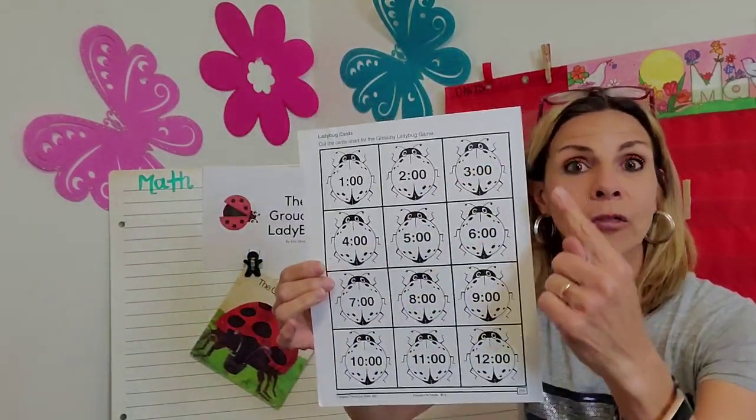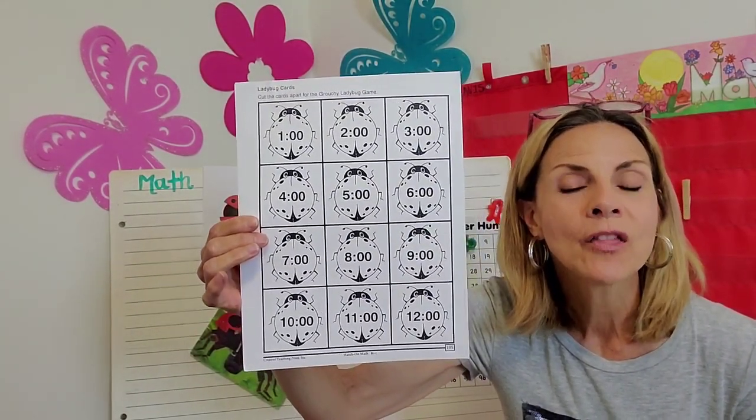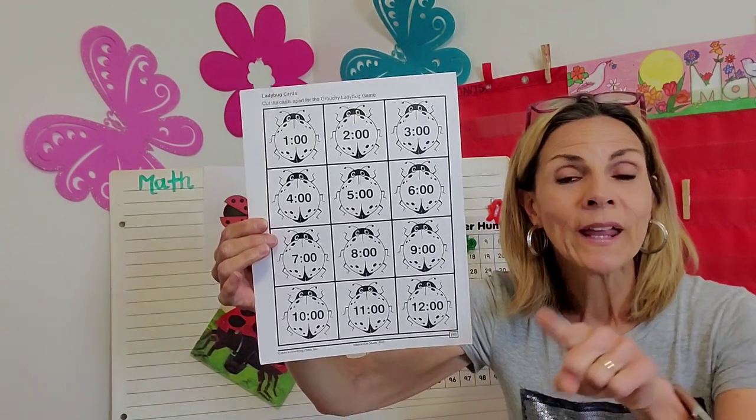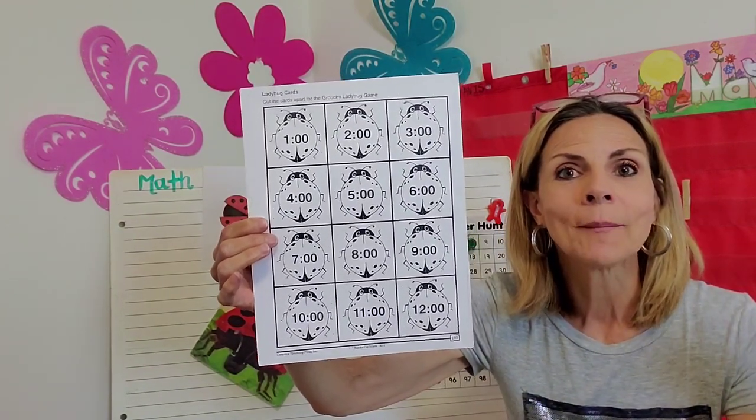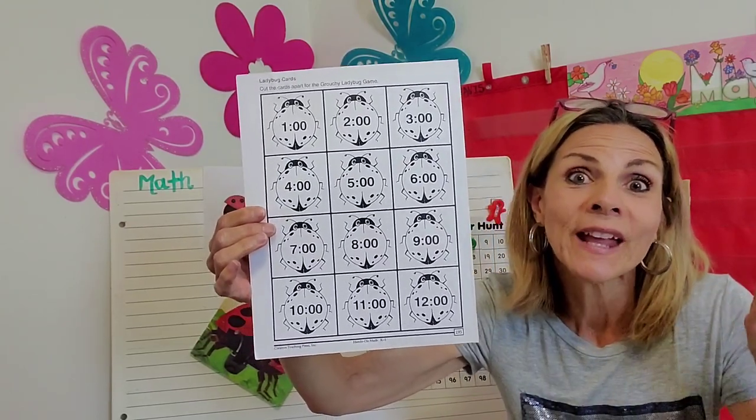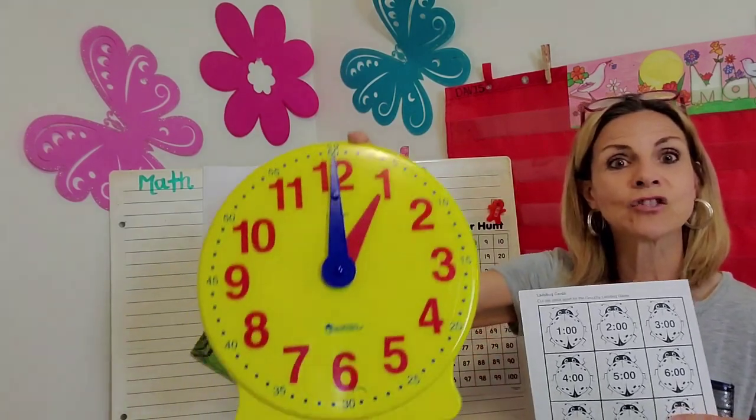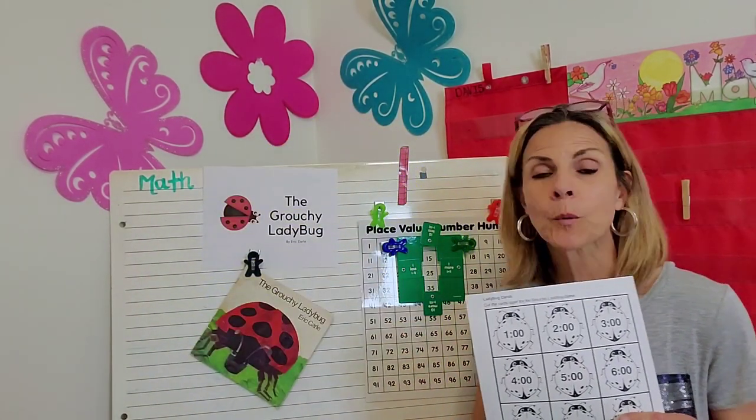Each ladybug forward is one hour later. So, one o'clock, two o'clock, three o'clock. And that just reminds me of how the grouchy ladybug went off. And each time he went off, it was a new hour when he met a new creature until the very end. So, practice your time on the hour skills and just go in order. That will be the first practice.